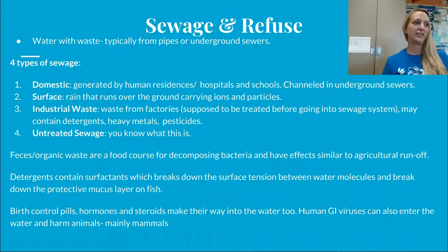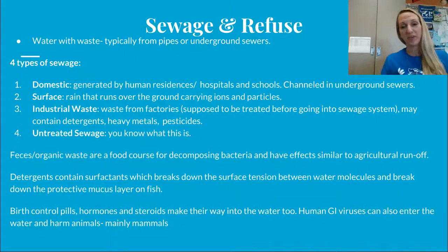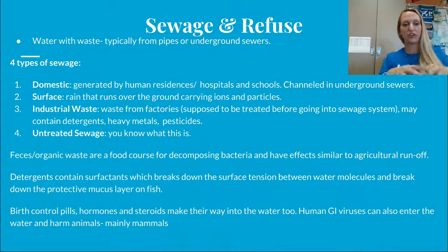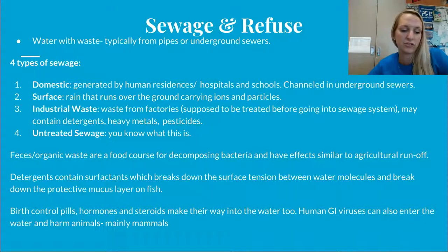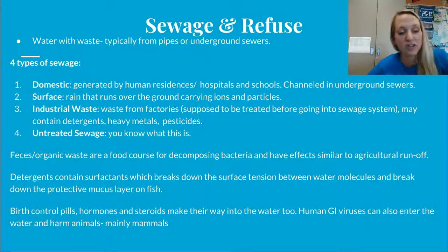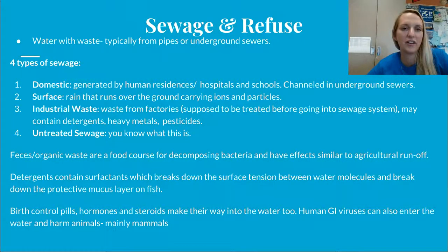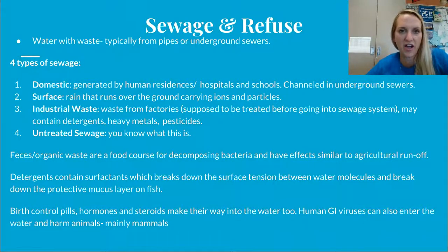Fecal material is an organic compound with lots of nutrients — but too many nutrients. Detergents contain surfactants that break down surface tension, breaking hydrogen bonding and making water more slippery so it can get into smaller crevices. Detergents can break down the mucus layer on fish, as seen at the end of the documentary caused by Corexit dispersants. Birth control pills, hormonal contraceptives, and steroids make their way into the water when flushed down toilets. Human gastrointestinal viruses can also enter the water and harm animals, mainly mammals.